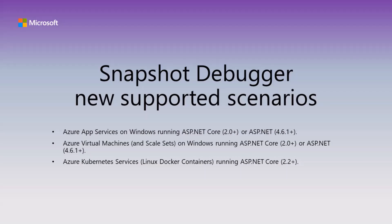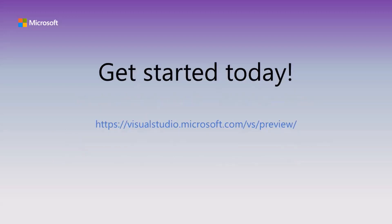You can try this feature out with Azure App Services running on Windows, as well as Azure virtual machines and Azure virtual machine scale sets for ASP.NET Core 2.0 and above on Windows, or ASP.NET 4.6.1 and above. It also works with Azure Kubernetes Services running on ASP.NET Core 2.2 and above. Please download the latest version of Visual Studio and try out these features — we would love to hear your feedback. To report issues, use the Report a Problem tool in Visual Studio. You'll be able to track your issues on the Visual Studio Developer Community site where you can also ask questions and find answers. Thanks for listening.